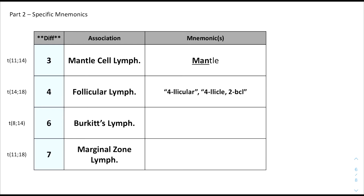For follicular lymphoma, we use '4-licular' for the difference of 4 between 14 and 18. We can think of '4-licle-2-bicle' — a wacky phrase — but follicular lymphoma is associated with BCL2 as the protein associated with the t(14;18) translocation.